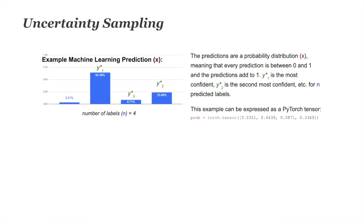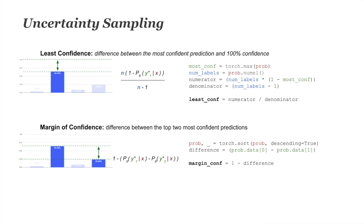The four-class prediction task is shown on the left and can be expressed as a PyTorch tensor on the right. We've predicted y0, y1, y2, and y3, with the most confident prediction at 64.39% across four labels. We can build on this softmax output — known as a probability distribution — to look at different uncertainty sampling methods. Note that the outputs of softmax are not strictly probabilities, but when outputs sum to one this is mathematically known as a probability distribution.